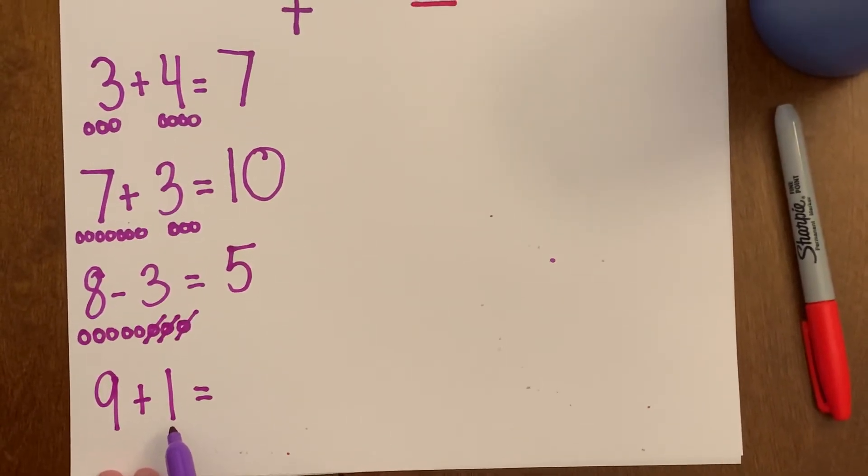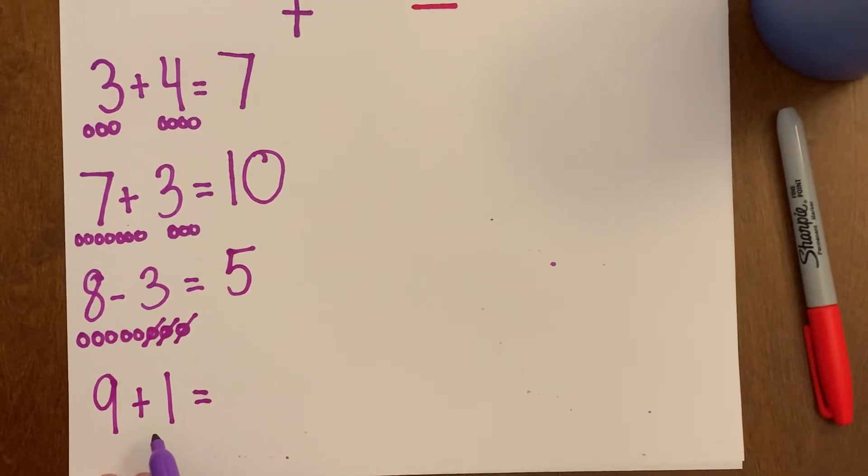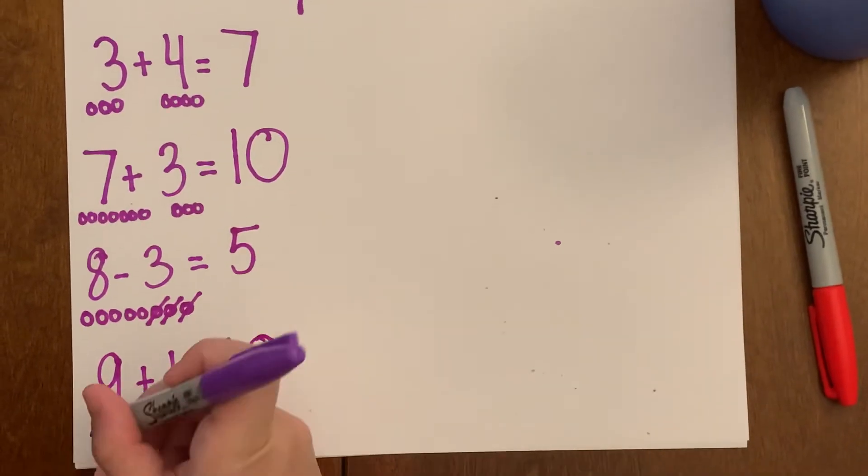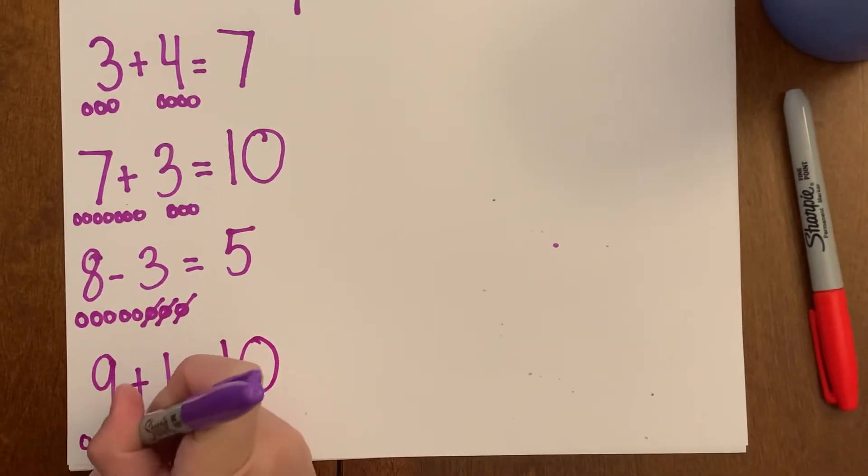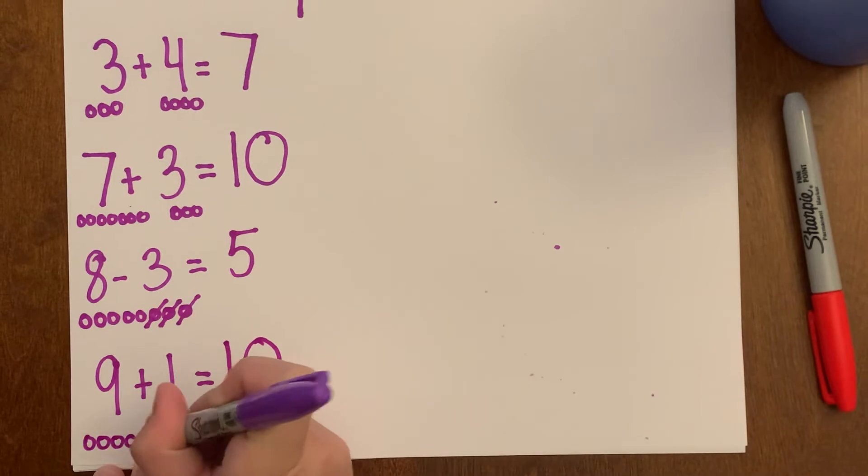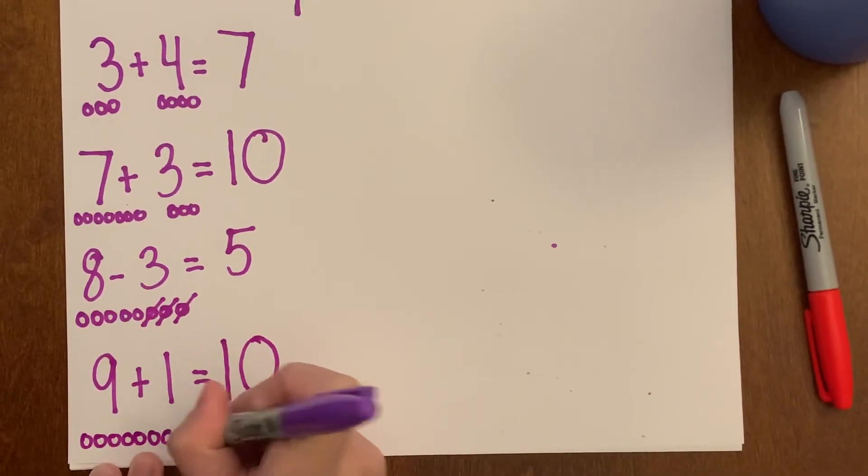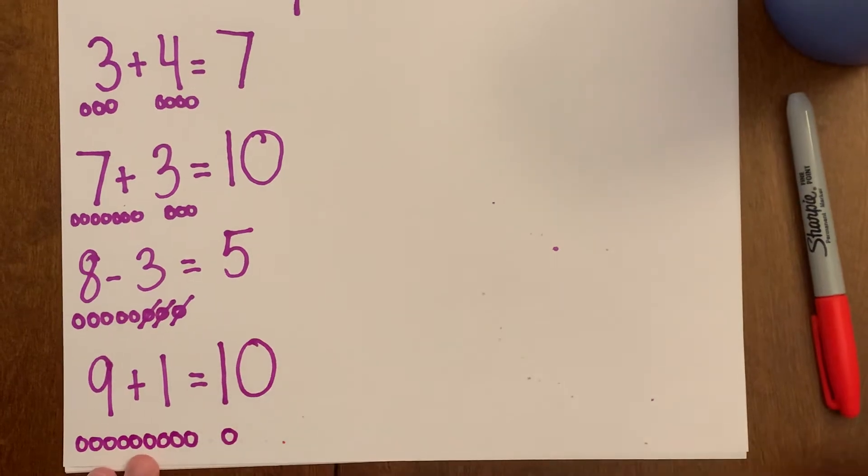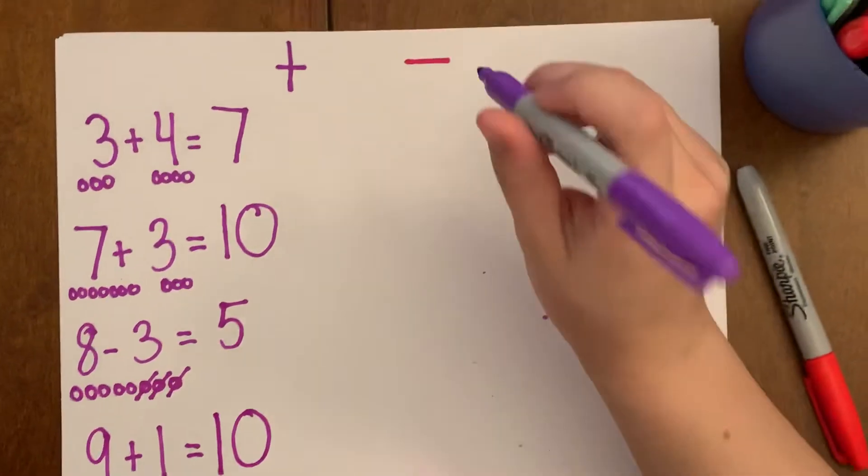What is one more, one number bigger than nine? You guessed it. It's ten. Let's draw a picture just to double check. One, two, three, four, five, six, seven, eight, nine circles plus one more. Nine, ten. We did it. All right, let's go to the next one.